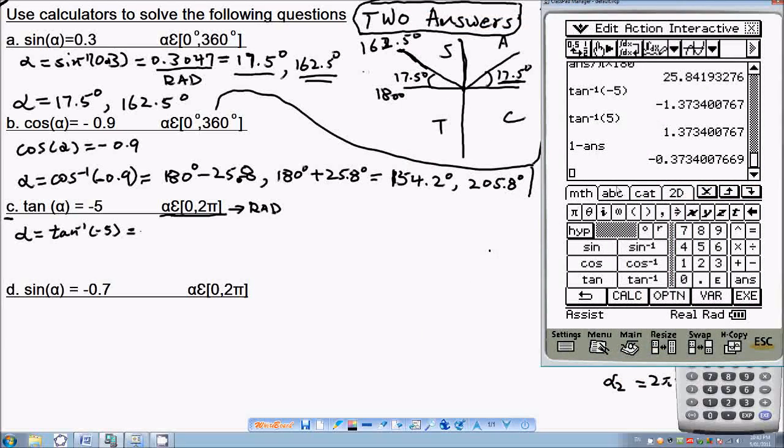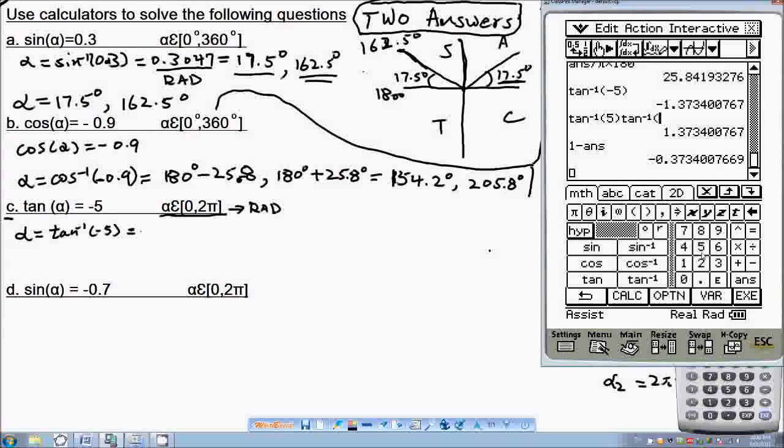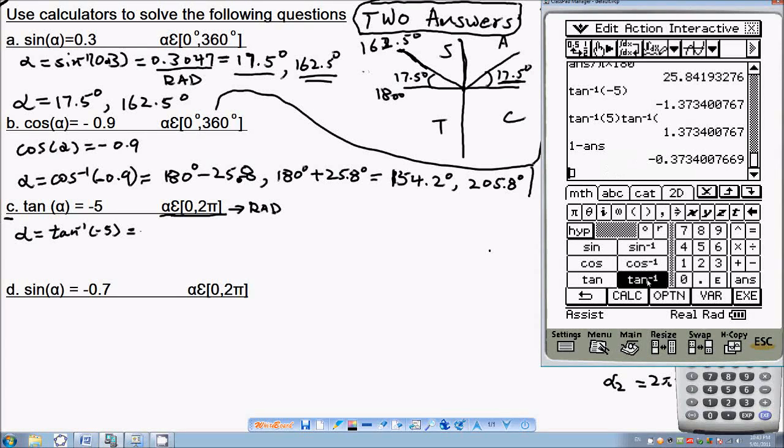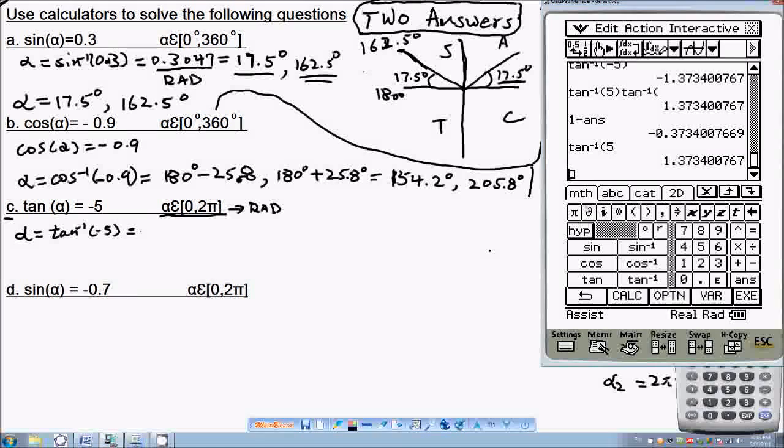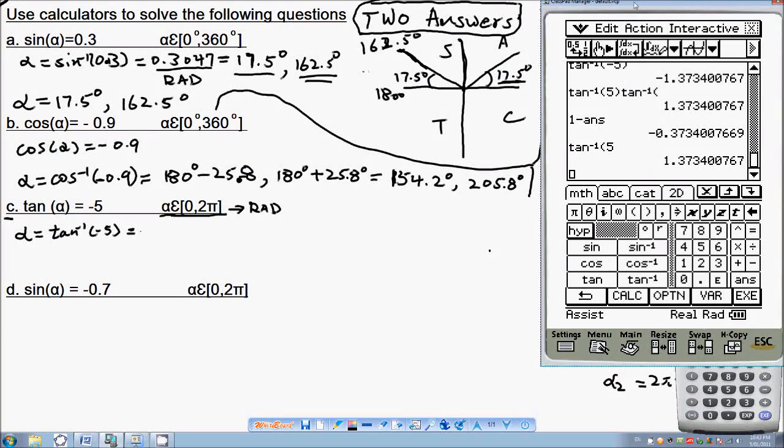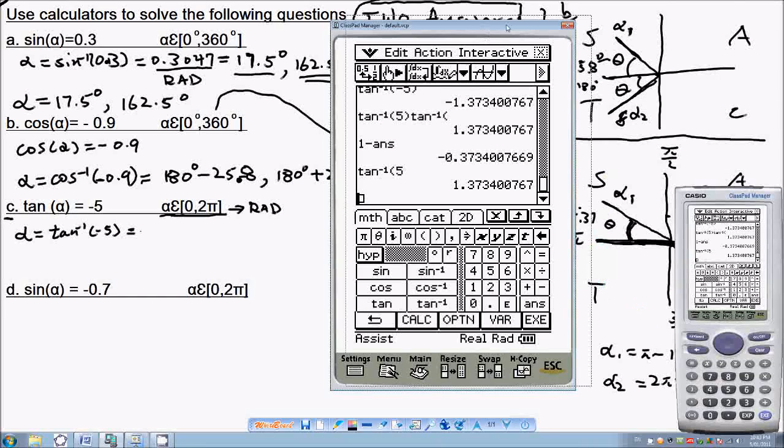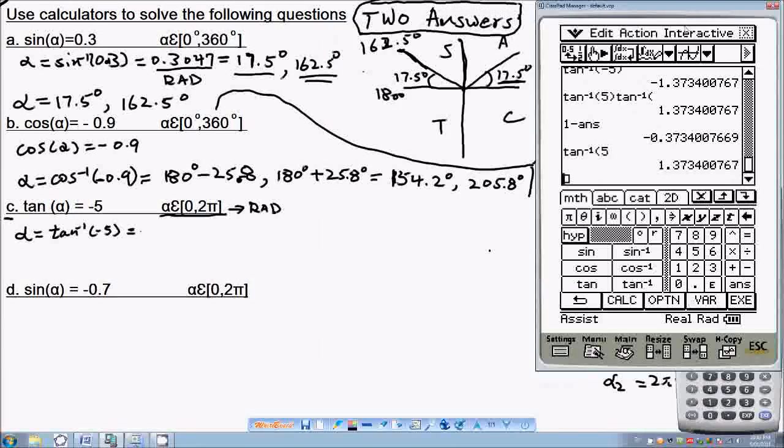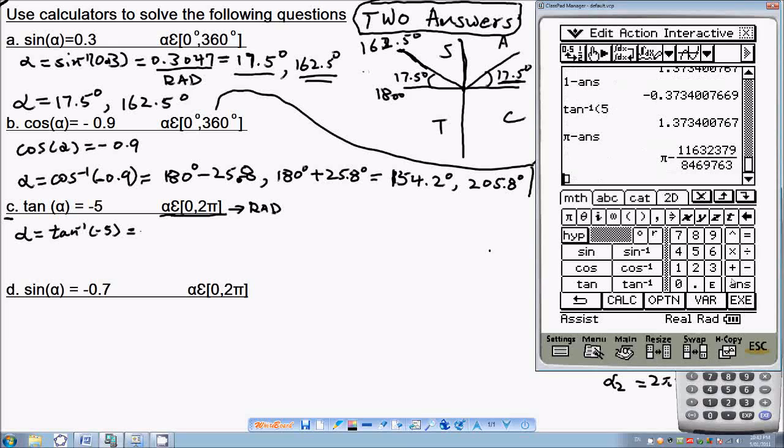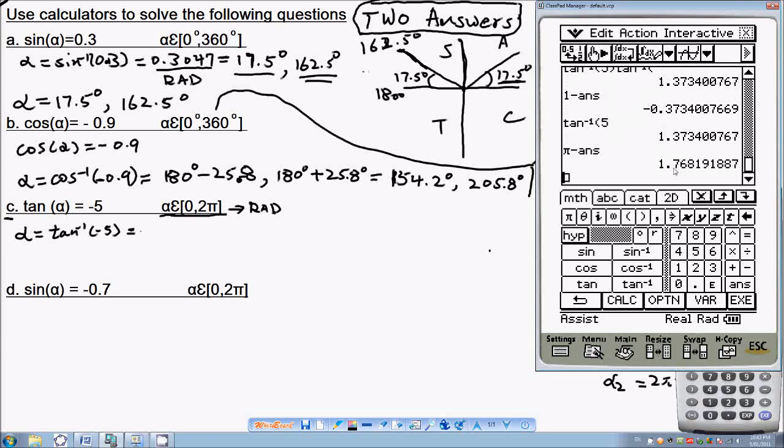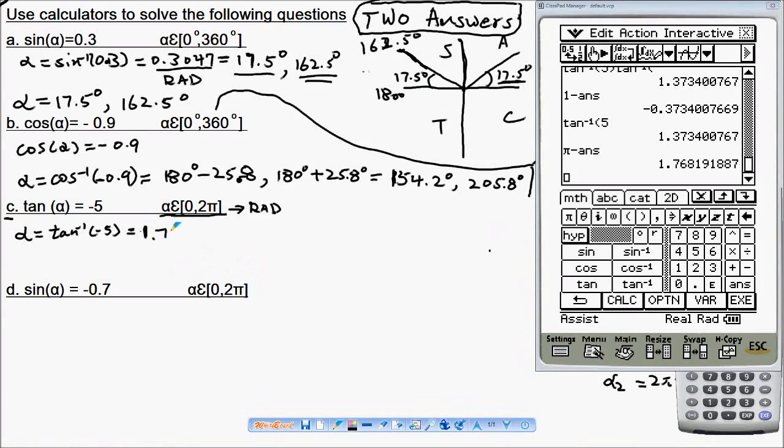Let's do it again. Inverse of 5. What's happening is pi minus 1.37. So we go to pi minus the answer, we will have 1.76. So one of our answer is 1.768.